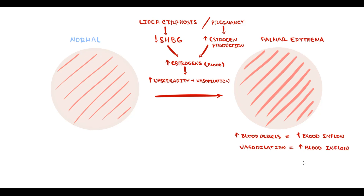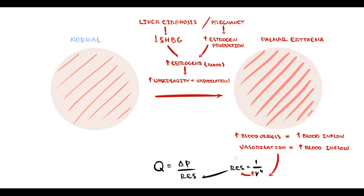Blood flow is equal to pressure difference divided by resistance, and resistance is inversely proportional to the fourth power of radius. Estrogens induce vasodilation — with vasodilation, radius increases, resistance decreases, and with decreasing resistance, blood flow increases. The increasing amount of blood in the vessels that supply the palms will cause erythema.